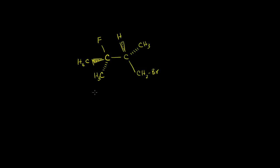Let's see if we can name this molecule using the RS system, sometimes called the Cahn-Ingold-Prelog system. The first thing to do is see if there are any chiral centers in this molecule. If there aren't, then we don't even have to use the RS system — we could just use our standard nomenclature rules and we'd be done.